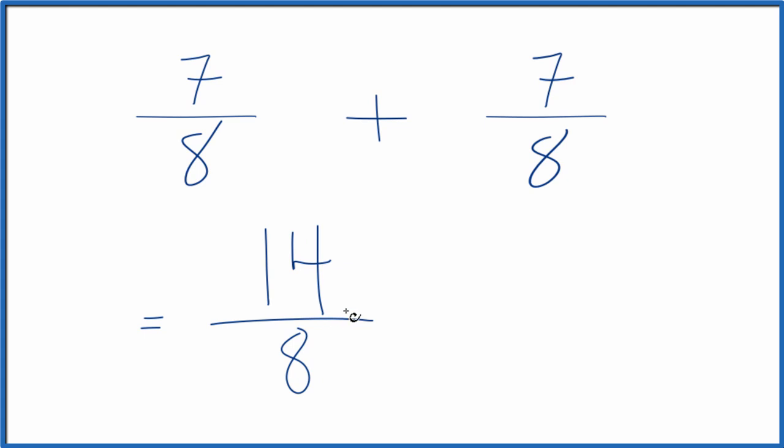These are both even numbers, so let's simplify this. Let's divide both by 2. 14 divided by 2 is 7, and 8 divided by 2 is 4. So we could simplify this down to 7 fourths.